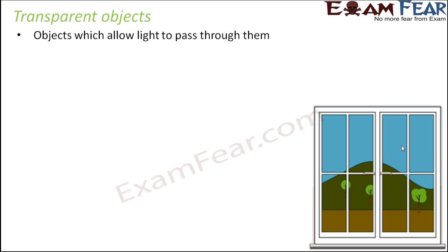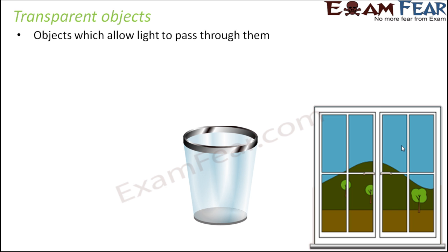Transparent objects are those which allow light to completely pass through them. Think of glass window panes — when you look through them you can see the scenery, trees, and buildings outside because the glass allows light to pass through. Similarly, a glass cup is transparent, so you can see what is inside it. A stainless steel glass, however, is not transparent, so you cannot see what's inside.